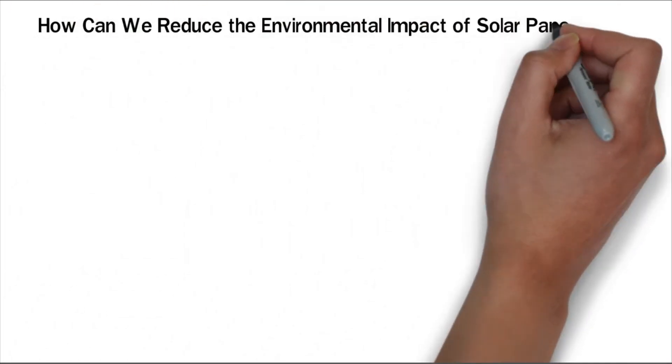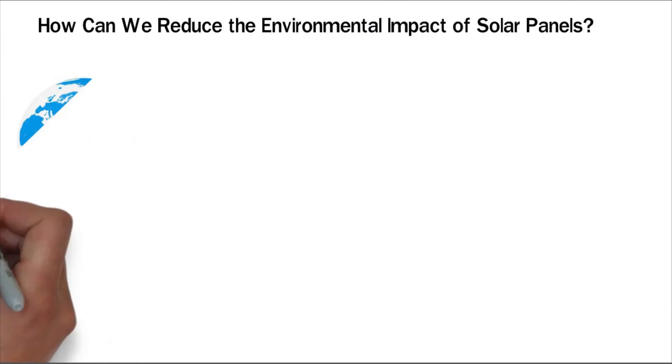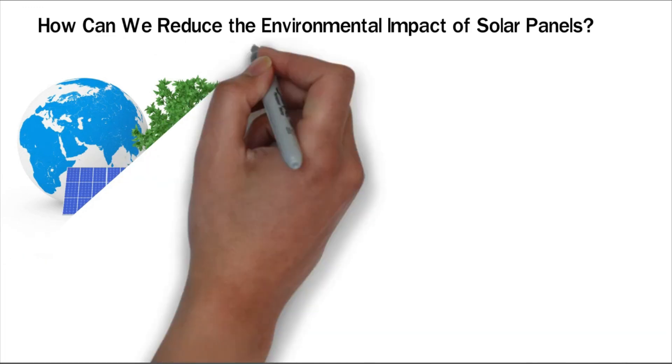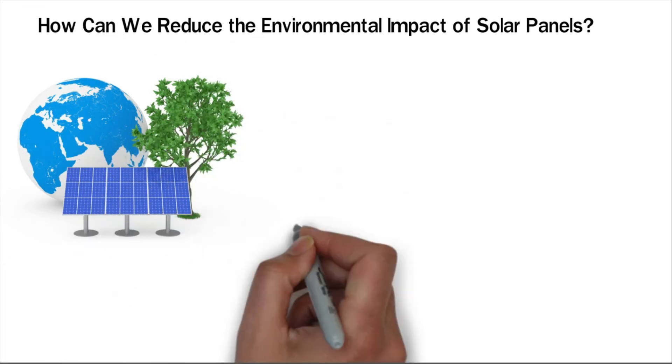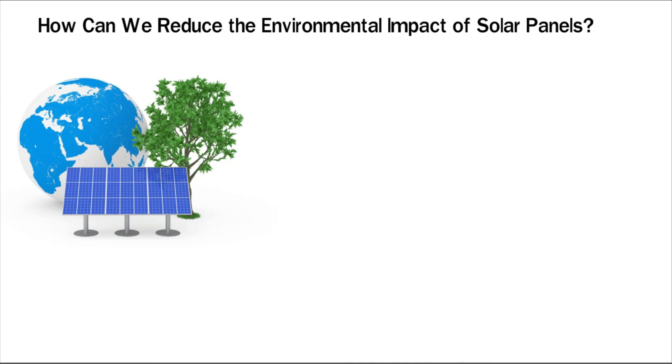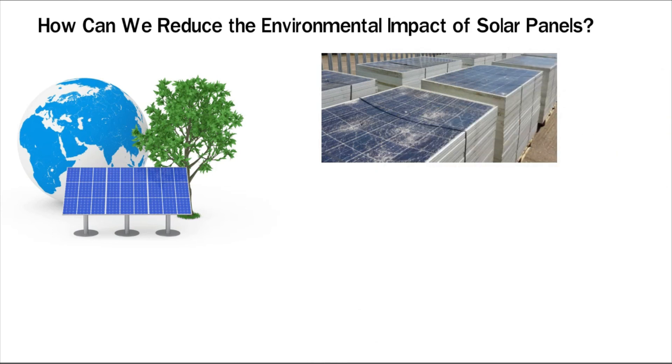How can we reduce the environmental impact of solar panels? There are several ways to increase how many solar panels are recycled. One idea is for the government to require the recycling of solar panels. That would make more facilities offer to recycle. Another idea includes funding companies that take panels apart. Then those parts could be sold for repairs.